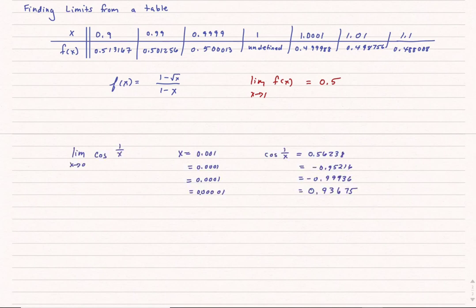Sometimes, though, it's easy to run into trouble if you only rely on a table. For instance, if I'm looking at the limit as x approaches 0 of cosine of 1 over x, the first couple values of x, things look like they're approaching the number negative 1. But if I go a little bit closer, suddenly, my values jump up to almost positive 1. Let's look at a graph of this.